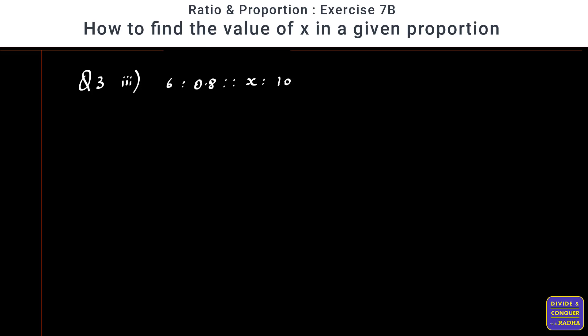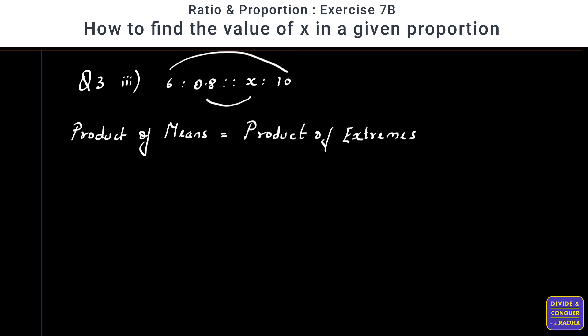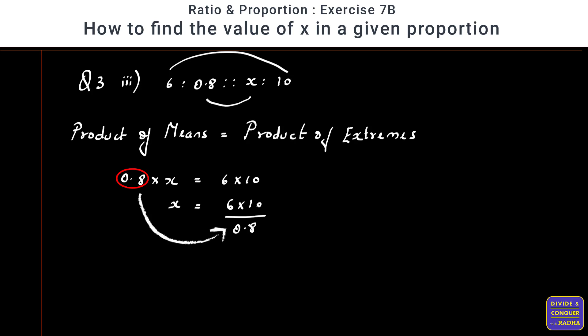Moving on to the third question: 6 is to 0.8 as x is to 10, given that the numbers are in proportion. x is the third term, so it's in the mean position. I'll equate product of means to product of extremes: 0.8 into x is equal to 6 into 10, so x equals 6 into 10 divided by 0.8.